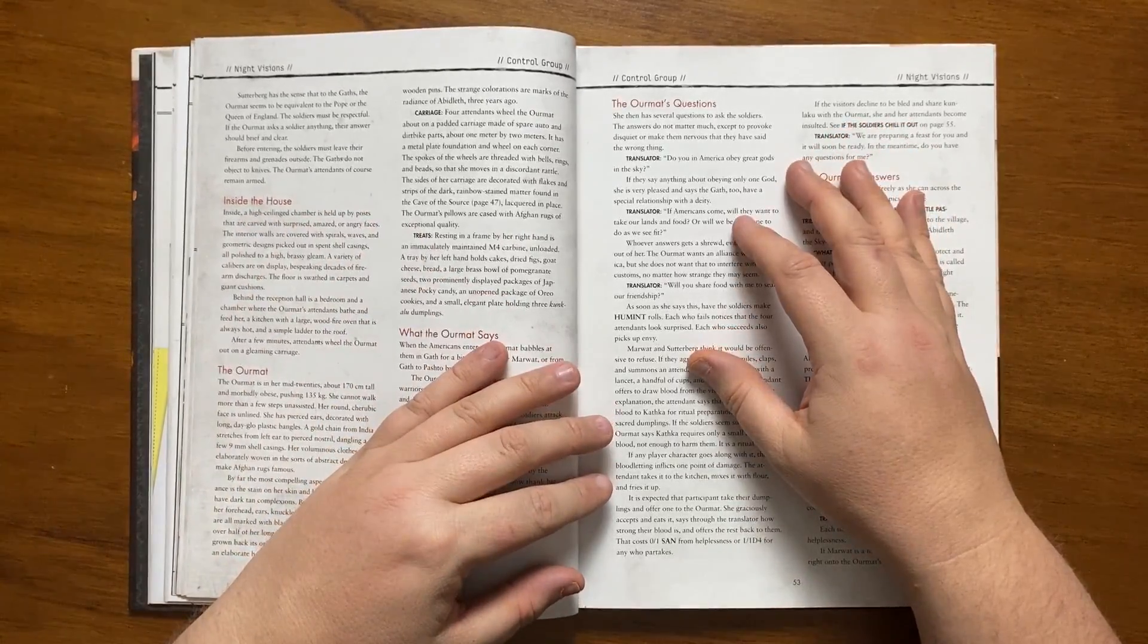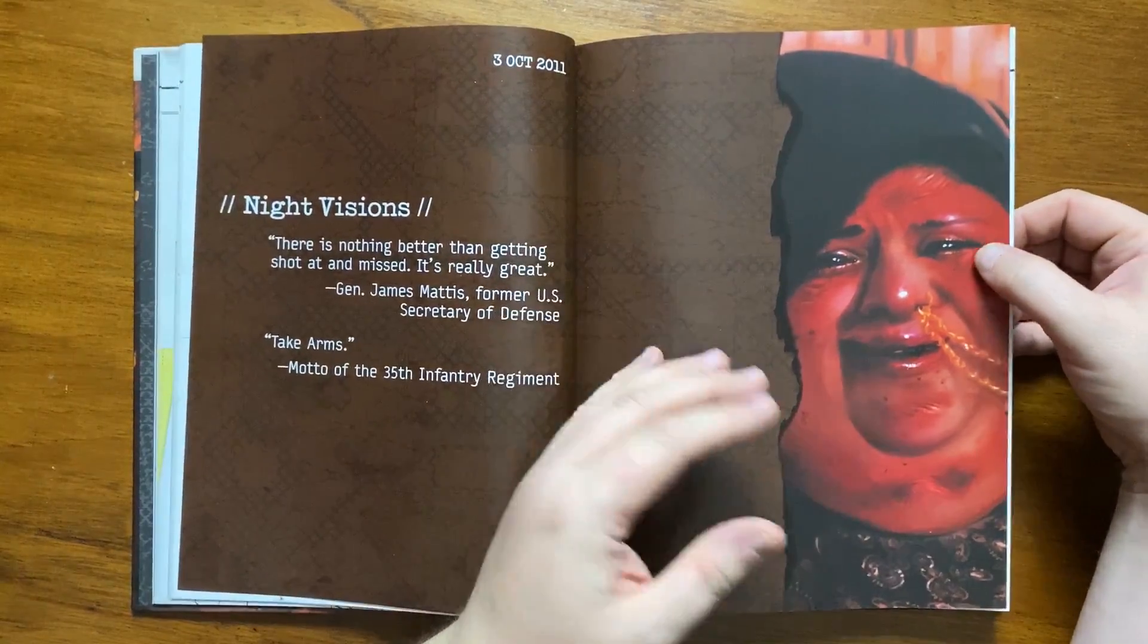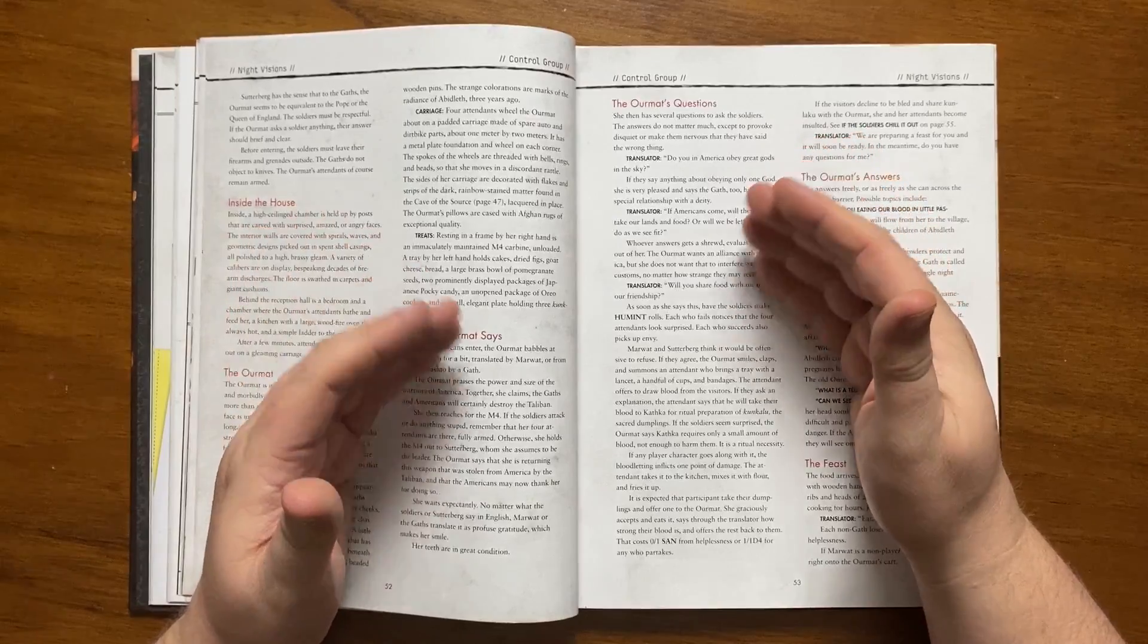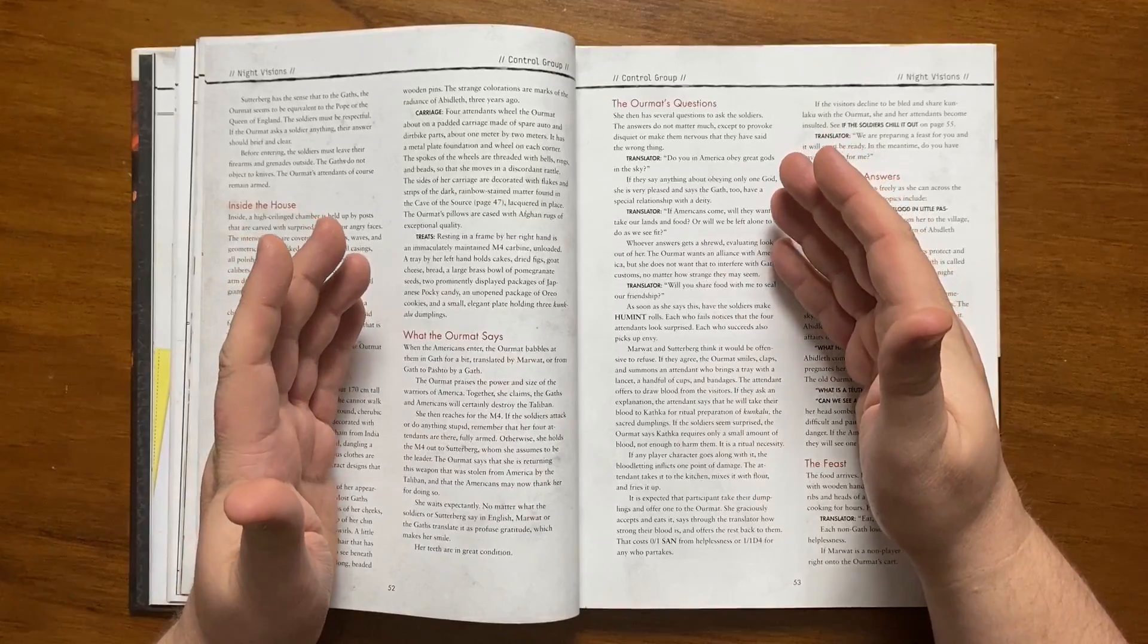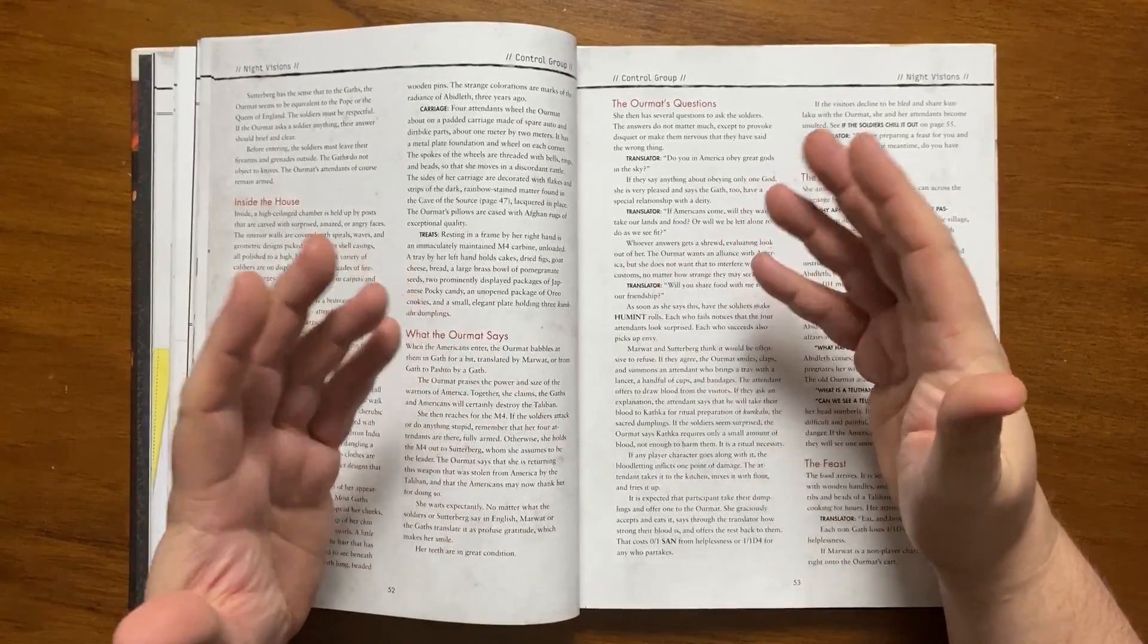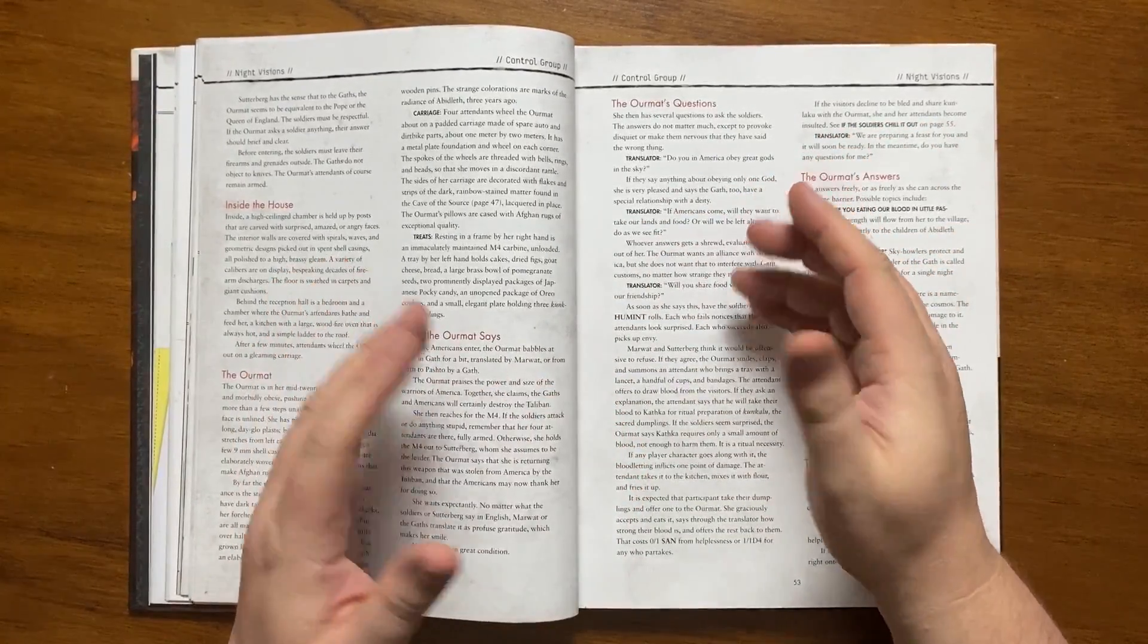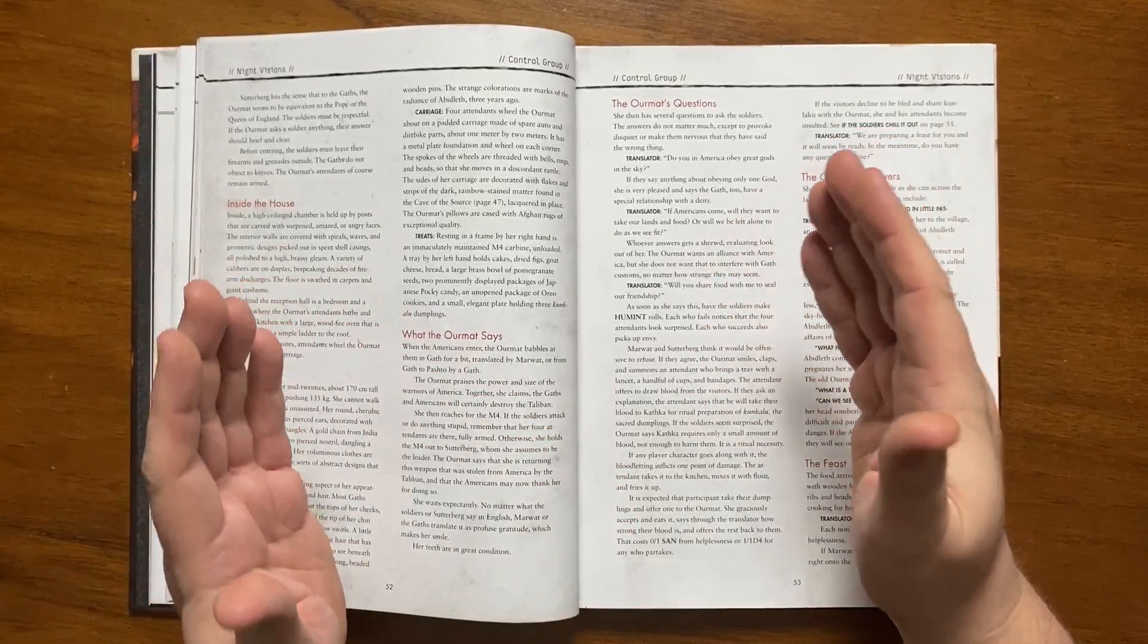The ormat herself is in her mid-twenties and morbidly obese, being unable to walk more than a few steps. She has a round cherubic face with pierced ears decorated with long day gold plastic bangles and has a gold chain that goes from her left ear to her nostril that has 9mm shell casings hanging from it. Her clothes are voluminous and elaborately woven with designs similar to afghan rugs. She has a stain on her skin and hair of blackish rainbow swirls and half of her long hair is white. She has four attendants who wheel her out on a carriage made from spare car parts with wheels on each corner that are decorated with bells, rings and beads which chime discordantly as it moves. Next to her right hand is an immaculate M4 carbine and her left has a tray filled with cakes, figs, bread and the like. There is also a small elegant plate that has three kunkalu dumplings on it.